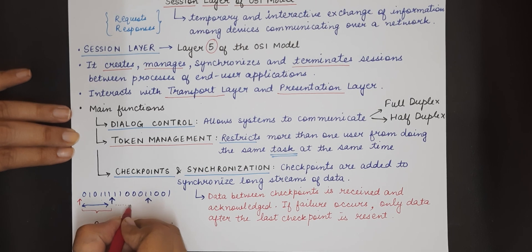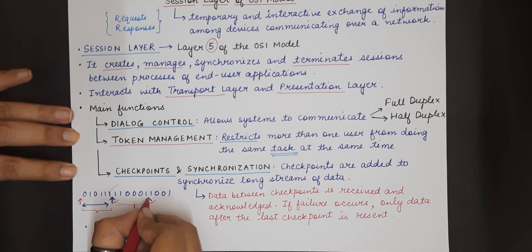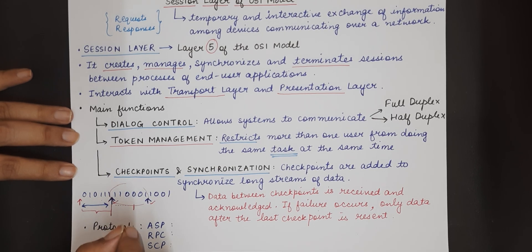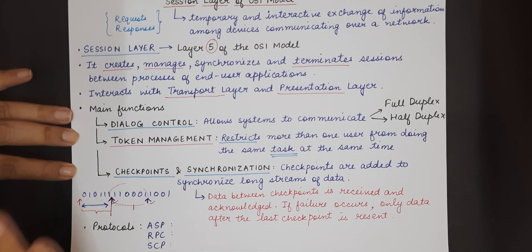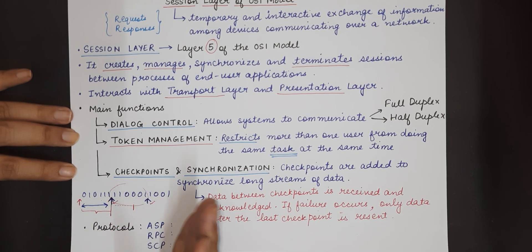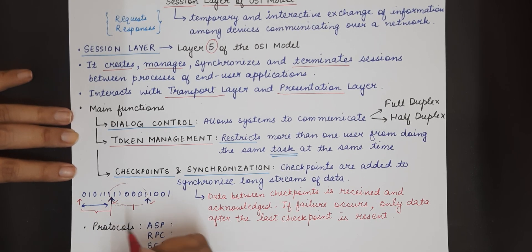Next, if some failure occurs during this point, between this checkpoint and this checkpoint, then we only need to send data from this particular checkpoint and not from the very beginning. So only the data that is lying between two checkpoints, as soon as it gets received, it is acknowledged. So that in further communication, if any failure happens, we go back to the last checkpoint that was acknowledged and resend the data from that point onwards.